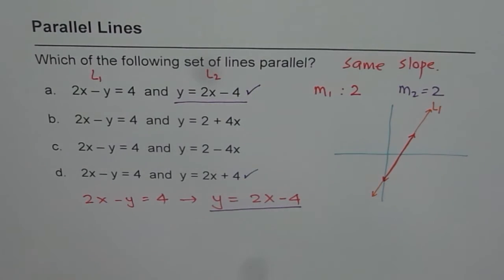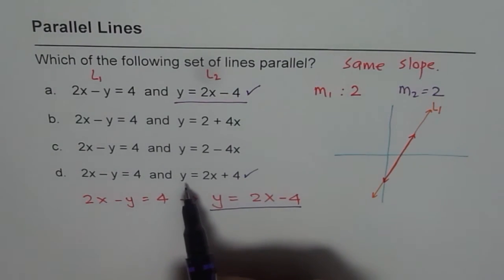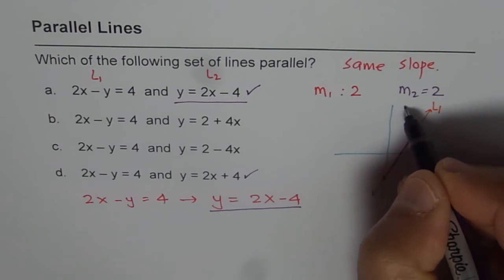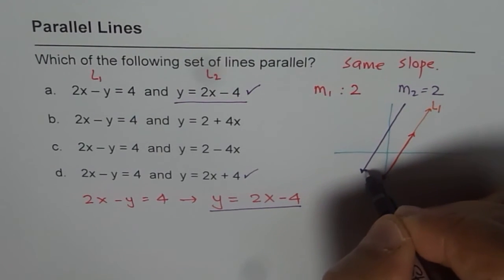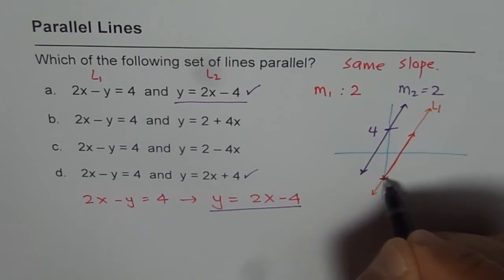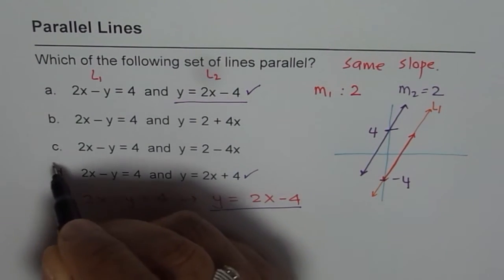The solution is D because that one has the same slope but the y intercept is different. Do you see that? So that is the solution. This is plus 4, this was minus 4. So the solution is D.